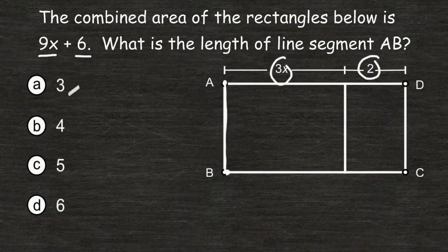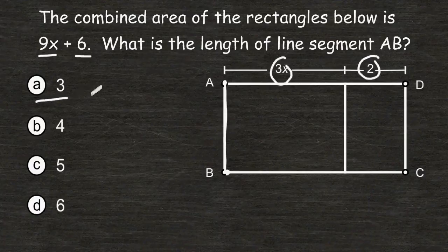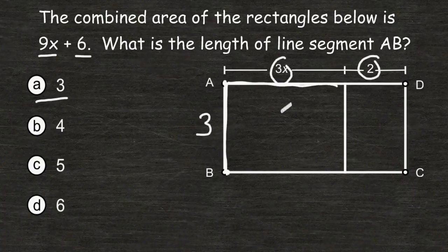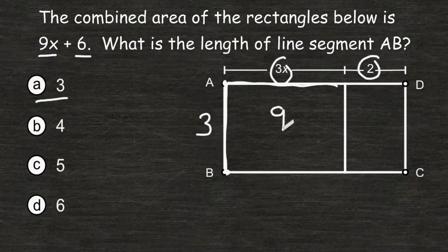What I'm going to do here is just test out the first choice given which is 3. If we write a number 3 right here, we would multiply this side of this rectangle by 3x to get the area inside this larger rectangle, and 3 times 3x is 9x.